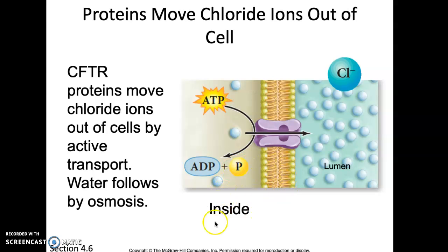By moving those chloride ions out of the cell and into the lumen, there will be a high concentration of those chlorine solutes there. As a result, water is going to move toward the higher solute concentration. Water can cross this membrane quite easily — it doesn't need the channel. Water will cross over and allow for the correct moisture inside your trachea. Without that moisture, if the lumen becomes completely dry, you would still manufacture mucus, but that mucus would be dry and sticky — a sticky mess without the water that is only attracted to that region if the chlorine is there.